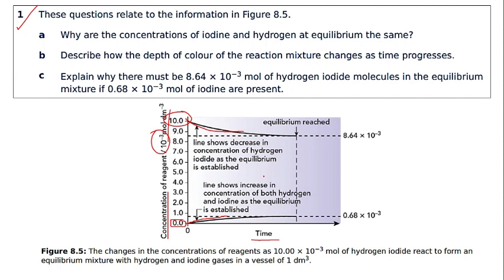As the reaction proceeds, the product line starts increasing, meaning products are forming. In this graph, hydrogen iodide is the reactant, decomposing into hydrogen and iodine as products. After some time, both the reactant and product lines become straight — their concentrations become constant. This is the equilibrium point, where concentration of reactants and products remains constant because the rate of forward and reverse reactions is equal.